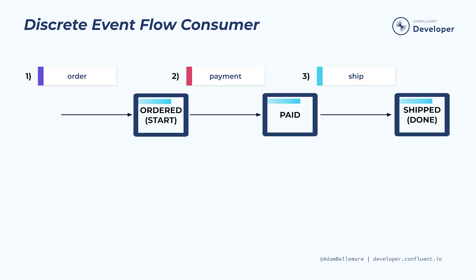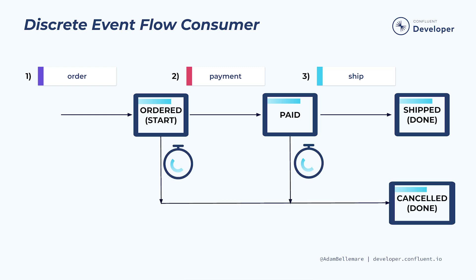The state machine of this event flow is tightly coupled to not only the structure of these events, but also the temporal order that they're received in. A discrete event flow may also contain multiple start and end states. The event flow designers may decide that it's reasonable for the intermediate stages to time out after a period of inactivity. For example, an order that is not paid for within 30 days is simply cancelled, terminating the state machine for that specific order. The termination of a state machine is also often the cause of its own new discrete event flow. Issuing either an order shipped event or an order cancelled event is itself the conclusion of one event flow, but could be the start of a new event flow for notifying the customer of their incoming order or sending them an apology email for the cancellation.